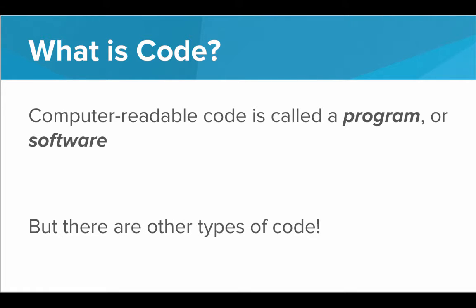So computer-readable code, code that a computer can read, is called a program or software. But there are many other types of codes. There's not just computer code. Code is everywhere.